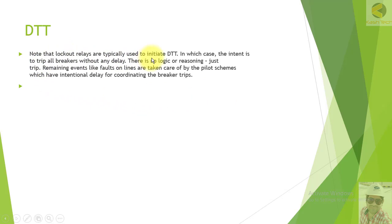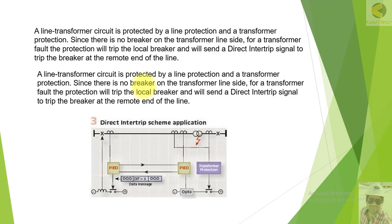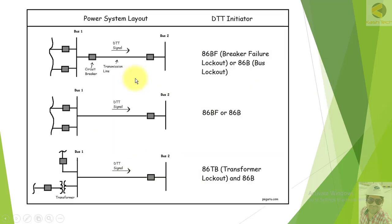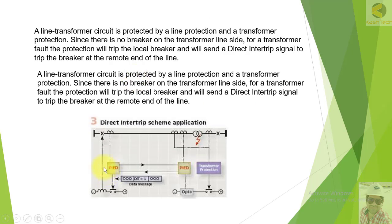Lockout relays are typically used to initiate DTT, and the intent is to trip all breakers without any delay — there is no logic or reasoning, just trip. Other events like faults on the lines are taken care of by pilot schemes, which have intentional delays for coordinating breaker trips. DTT has no intentional time delay for breaker coordination, which is why it is super fast, but on the other hand it has no security checks, so interference or communication failure might result in malfunction of the circuit breaker.